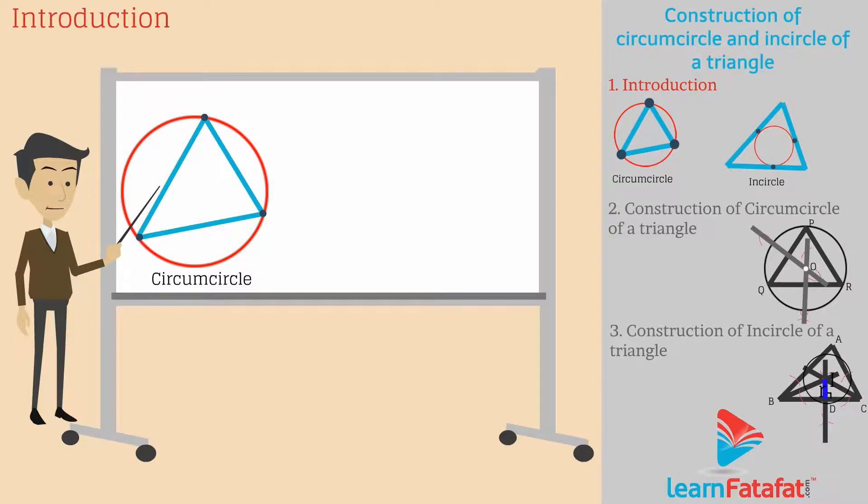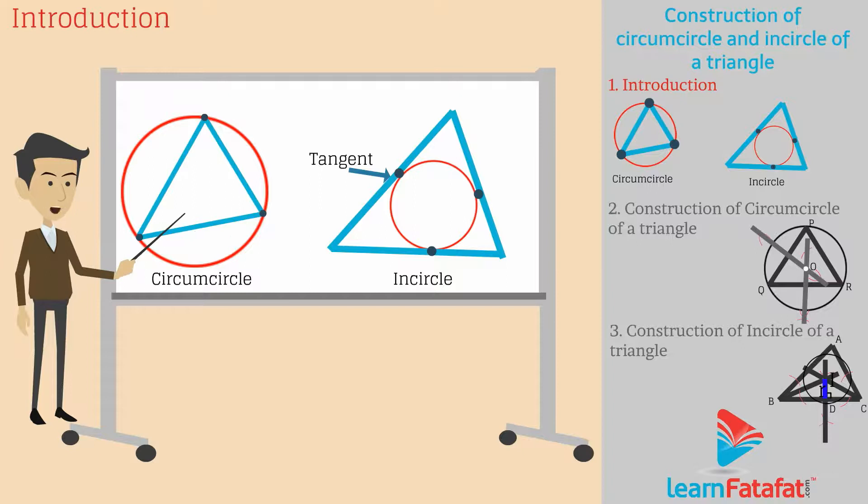Let us study construction of circumcircle of a triangle. And an incircle signifies a circle which touches each side of a triangle. That is, each side is a tangent to the circle.